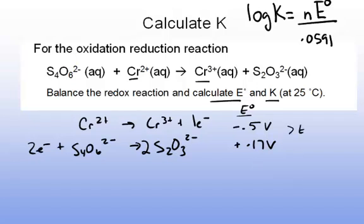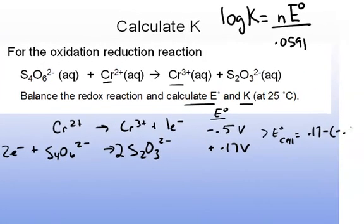So the standard EMF of this particular cell, the standard cell potential, is going to be the standard potential for the compounds being reduced, which is 0.17, minus what's being oxidized, which is negative 0.5. So the standard cell potential here is positive 0.67 volts.